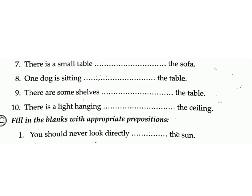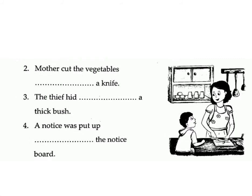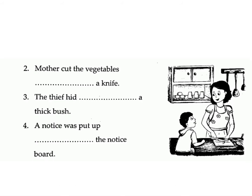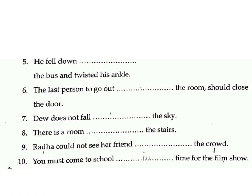Sentence 9: There are some shelves ___ the table. Answer: above. Sentence 10: There is a light hanging ___ the ceiling. Answer: from. Exercise C: Fill in the blanks with appropriate prepositions. Sentence 1: You should never look directly ___ the sun. Answer: at. Sentence 2: Mother cut the vegetables ___ a knife. Answer: with. Sentence 3: The thief hid ___ a thick bush. Answer: behind. Sentence 4: A notice was put up ___ the notice board. Answer: on.